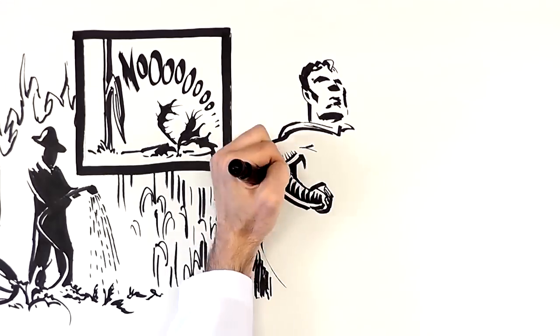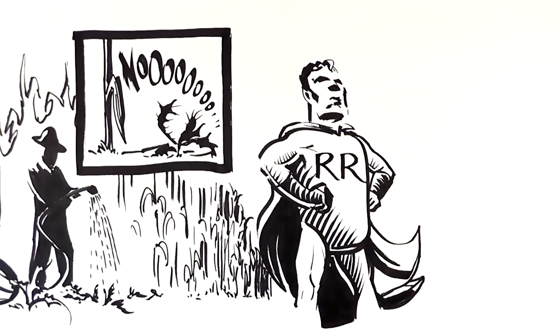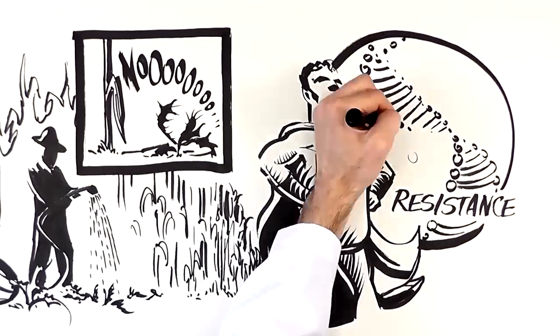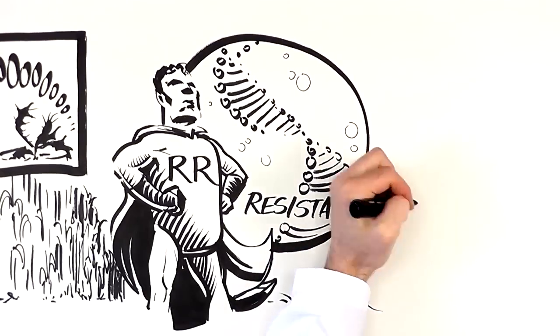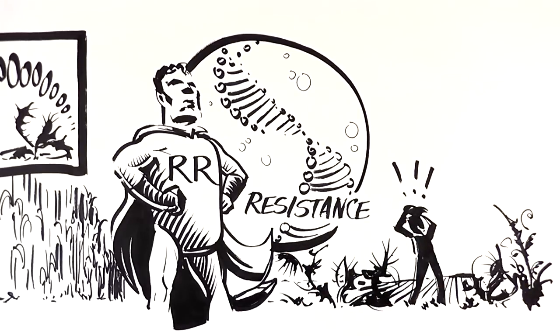Roundup Ready seemed like a superhero, but this superhero had a fatal weakness: resistance. Some weeds have genes that protect them from Roundup's effects. And the more Roundup farmers used, the quicker the resistance genes spread over time.